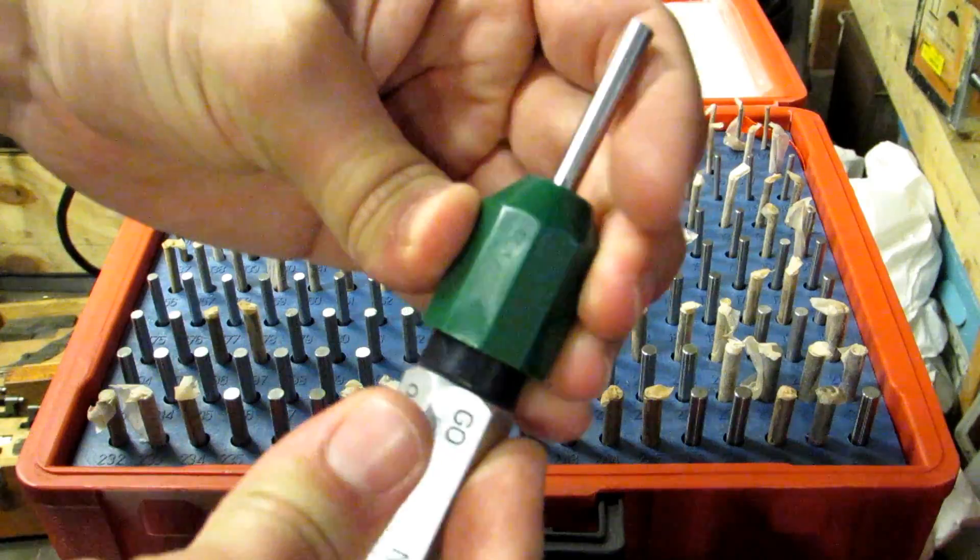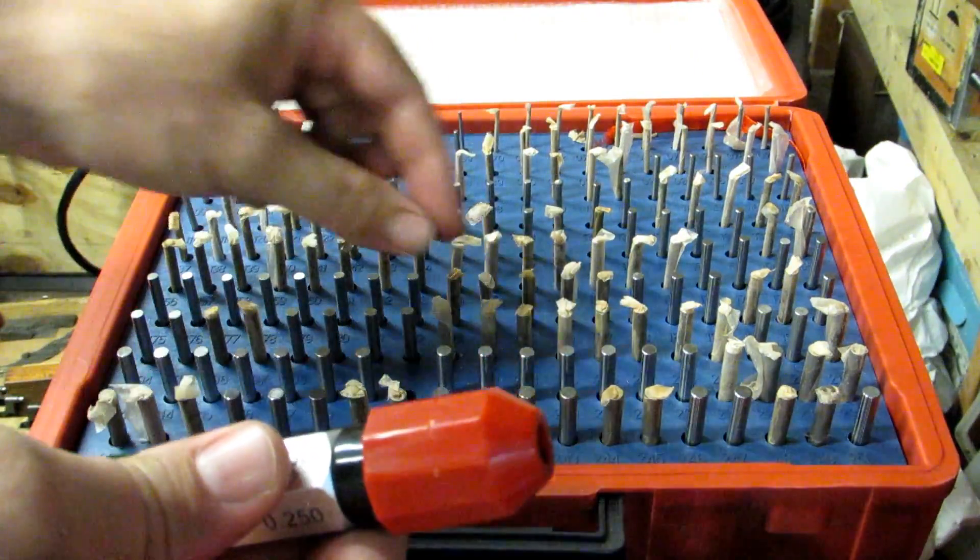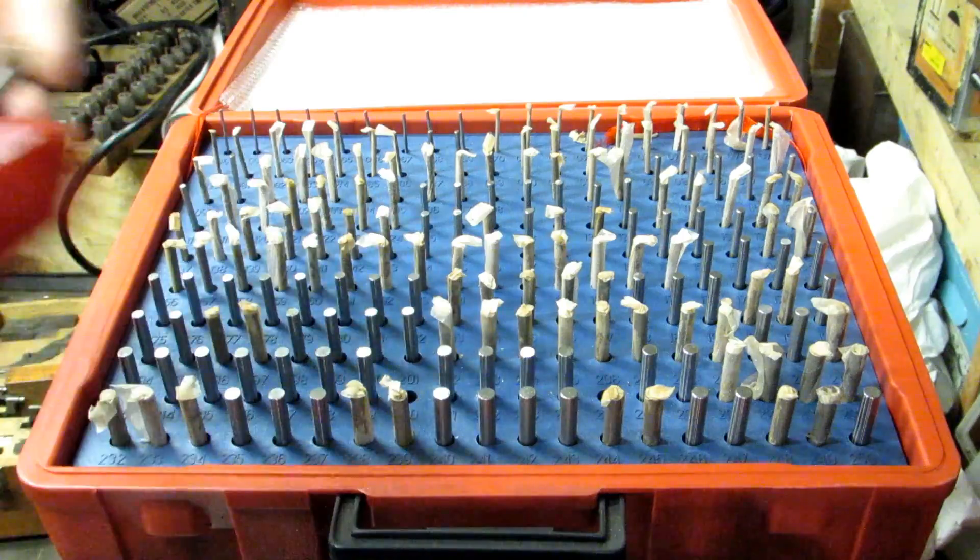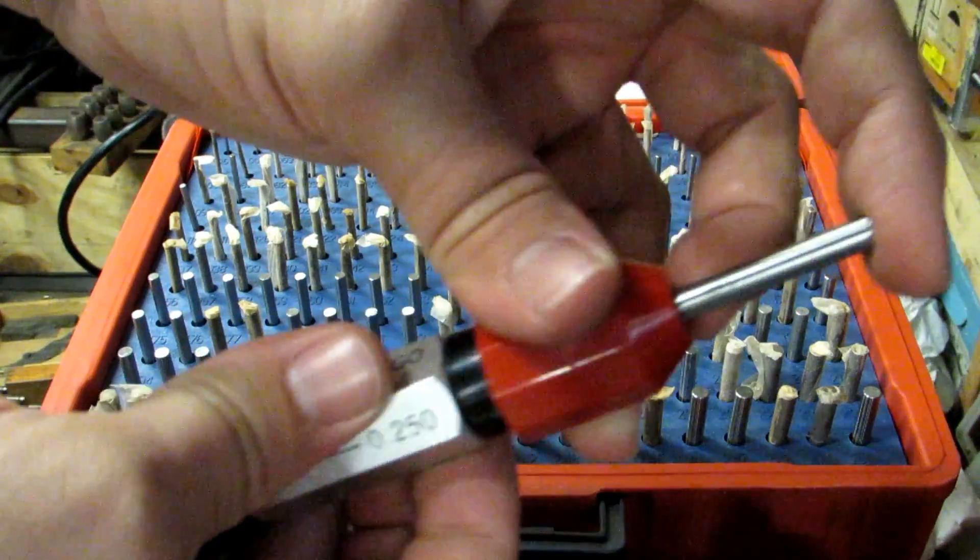This tightens up just like a drill chuck. Then grab your 225 pin and put that in the no-go spot.